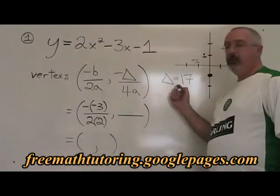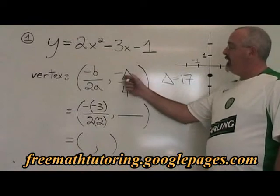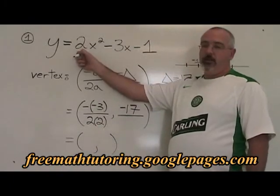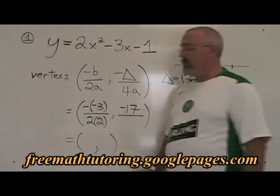Our delta is 17, so negative delta is negative 17. a is 2, so 4a is 4 times 2.